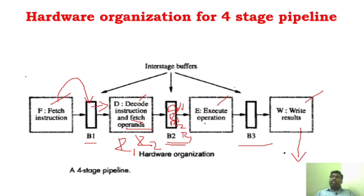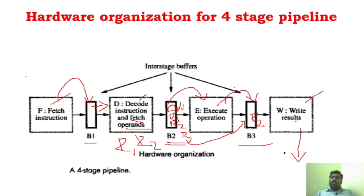Buffer 2 also has the information about where the result has to be stored — that is R2, the destination operand. Everything will be stored in buffer 2. Now the execution unit will take whatever information is present and perform that particular operation — the actual addition of R1 and R2 will take place here. The result will be stored in buffer 3, along with information that we have to save the result in R2. With that information, the write unit will write the result in R2. This is the normal operation of four-stage pipelining.